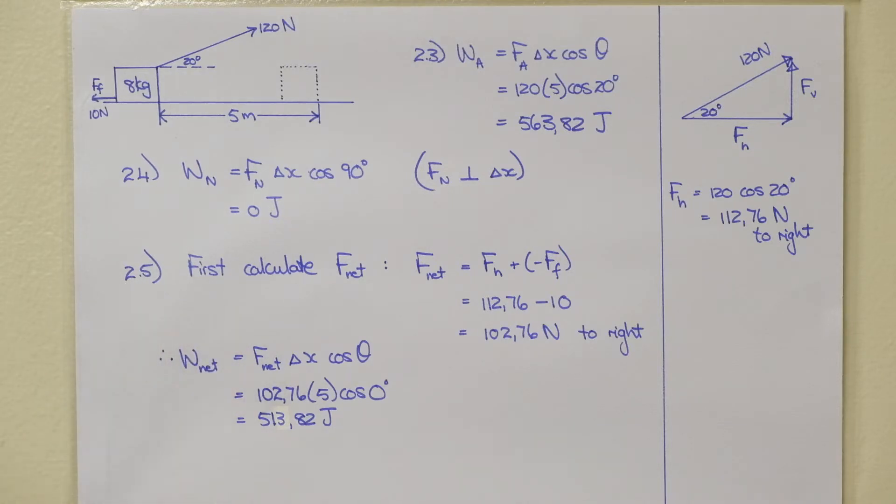Then for 2.5 we have to calculate the work due to the net force or the work done by the net force. Here is our equation. W net is equal to F net delta x cos of theta. But I first need to calculate F net.